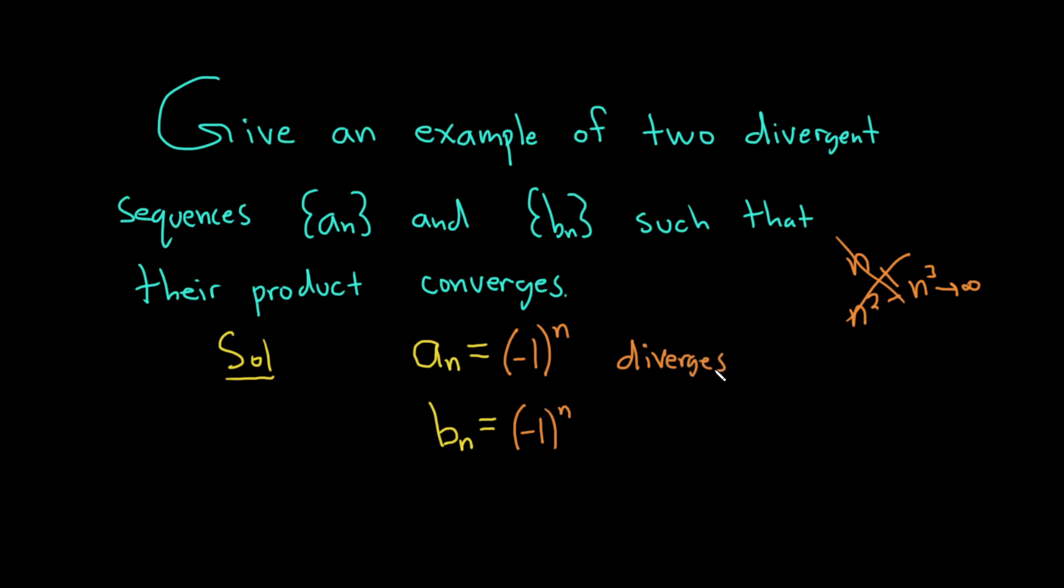Because as n approaches infinity, the sequence just oscillates. No matter what, it's going to be 1 or negative 1. So if you take the limit as n approaches infinity of negative 1 to the n, this limit does not exist. Therefore, these sequences diverge.